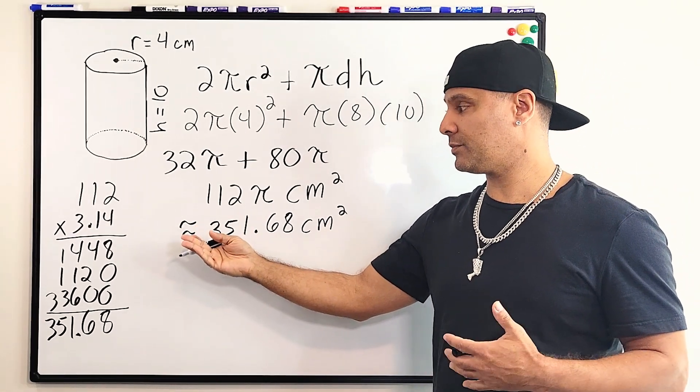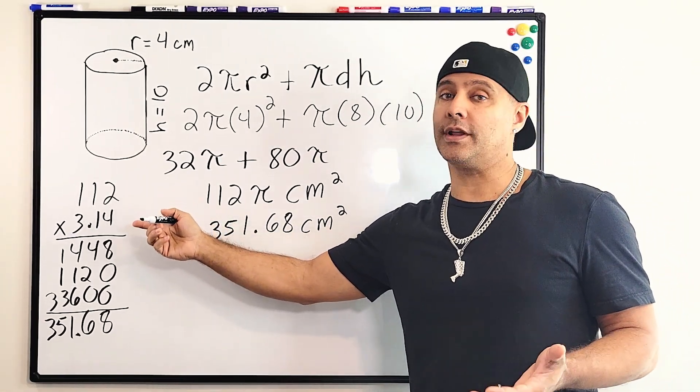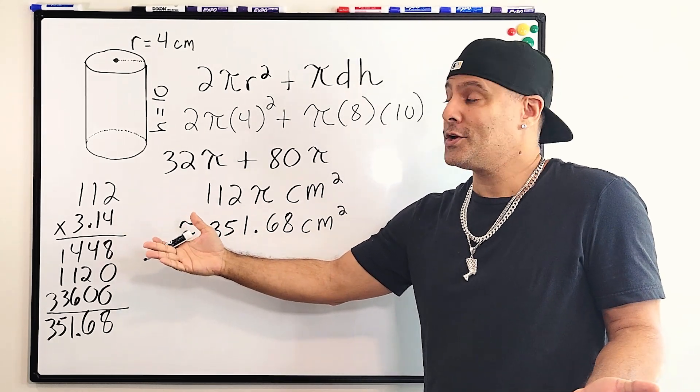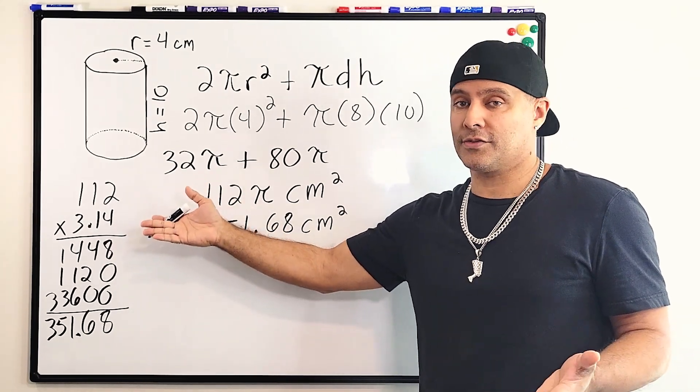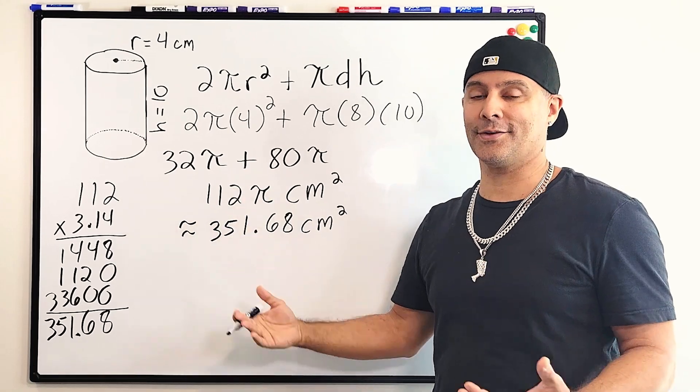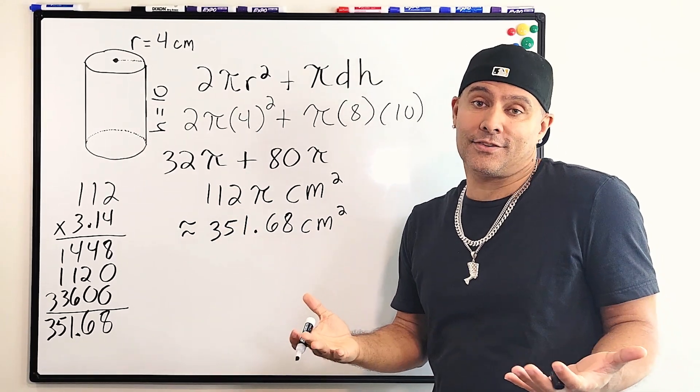Now, the reason I said approximately equal to is because 3.14 is an approximation for π. So as soon as you use an approximation in your formula, the result itself is an approximation, and that is all there is to it.